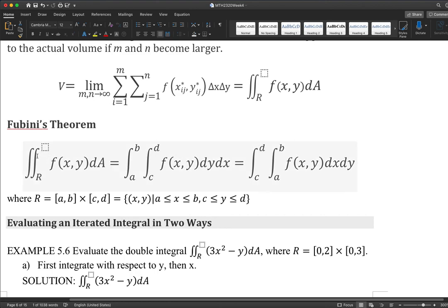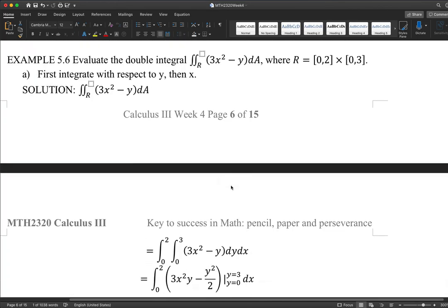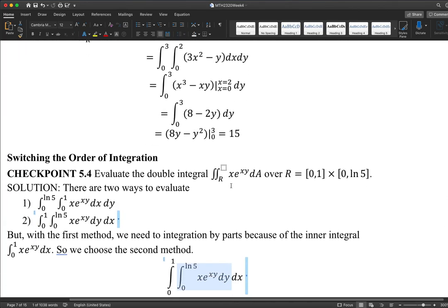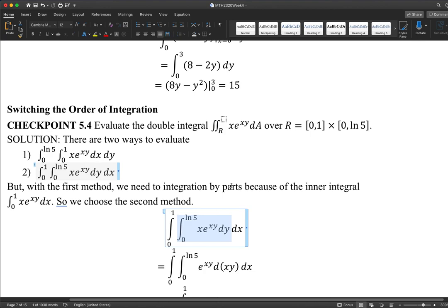Fubini's theorem says a double integral can be evaluated in two ways. Each is an iterated integral, and indeed they should be the same. We showed one simple example. We say in general the order either way would work. But many times the order doesn't matter, like in this case. Thank you for watching. See you next time.